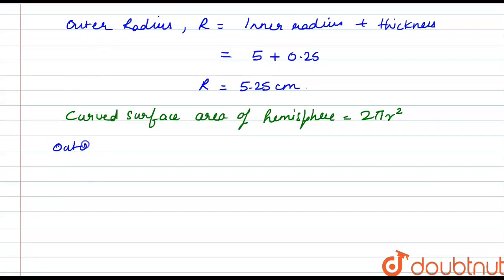So the outer CSA of the bowl would be 2πR². So it would be 2 into π, which is 22/7, and R is 5.25 whole squared.